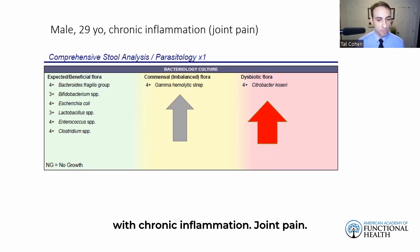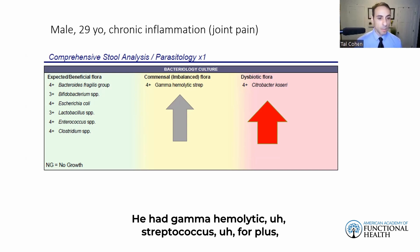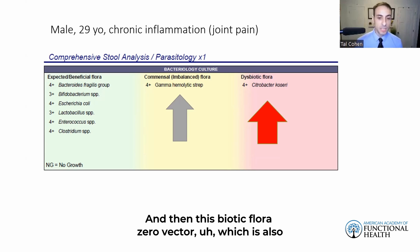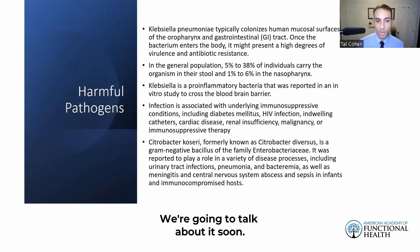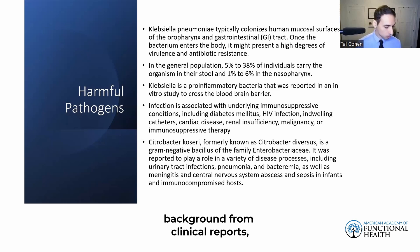We always want to focus first on whether the patient has dysbiotic flora bacteria, then look at imbalanced bacteria. Here's another patient: a 29-year-old male with chronic inflammation and joint pain. He had two notable findings — imbalanced flora showing gamma-hemolytic Streptococcus at four plus, a really high amount, and dysbiotic flora showing Citrobacter koseri also in a high amount.